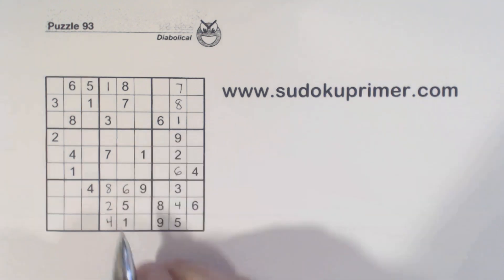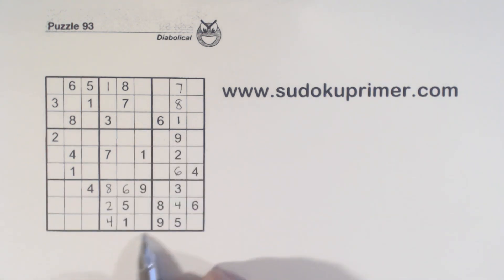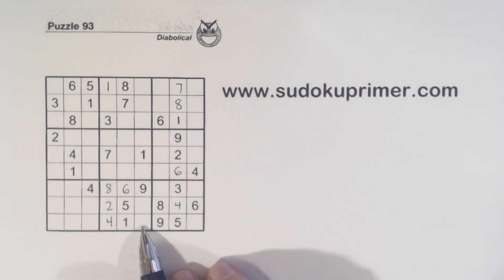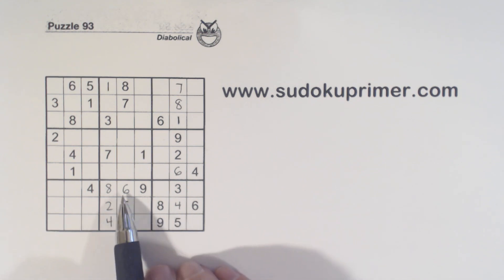With that six we can fill those in, and we've filled in everything in this box except for the three-seven twins.